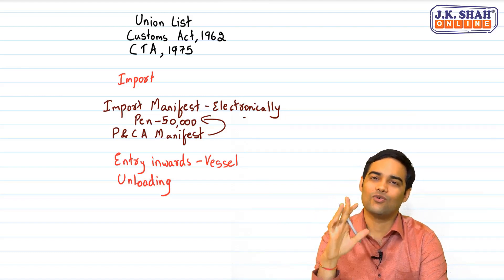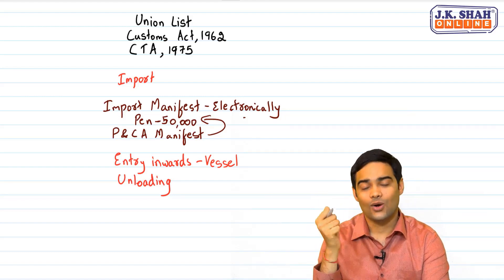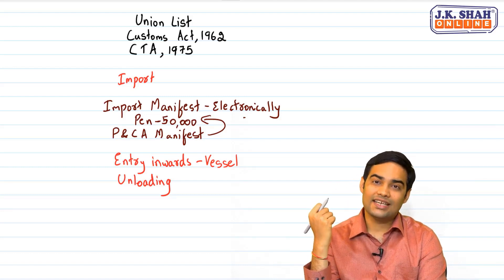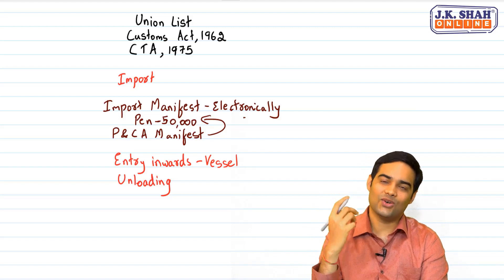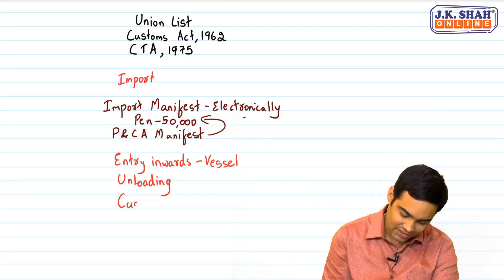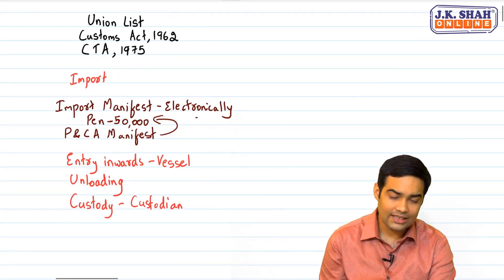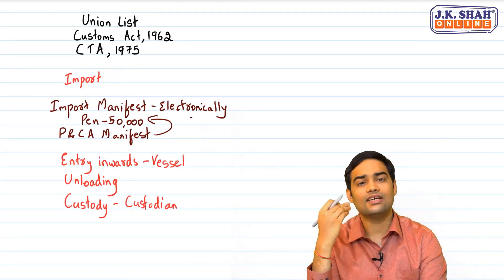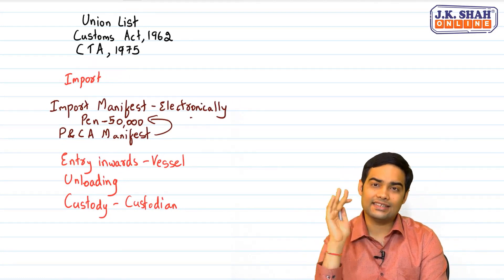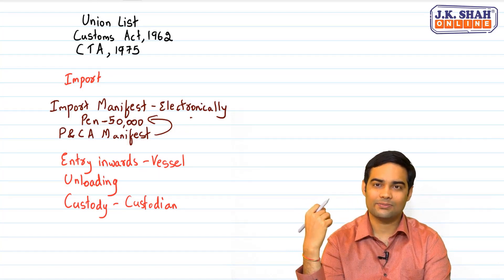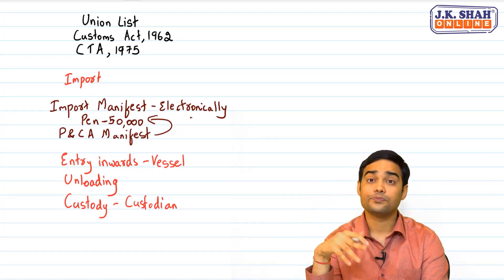Once goods are unloaded, the custody of the goods is given to the custodian. Port authorities are the custodians. If any goods are lost in the custody of the custodian, the custodian is liable to pay custom duty — this is clearly given in the law.